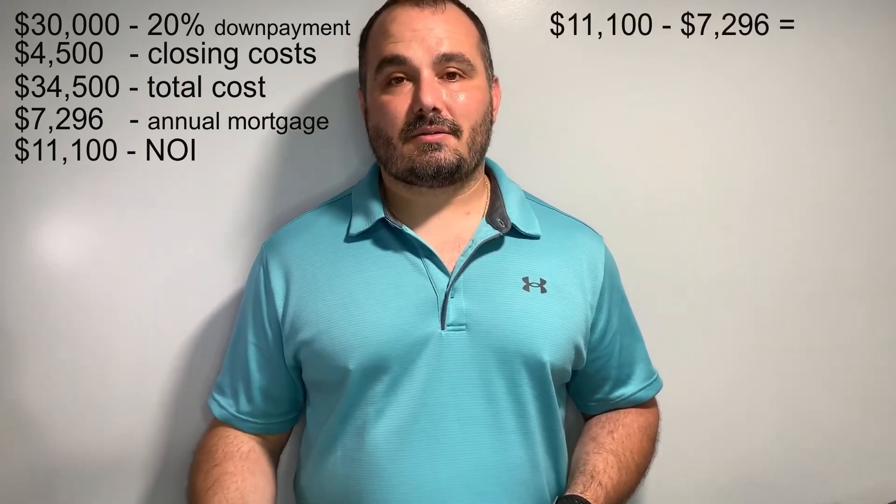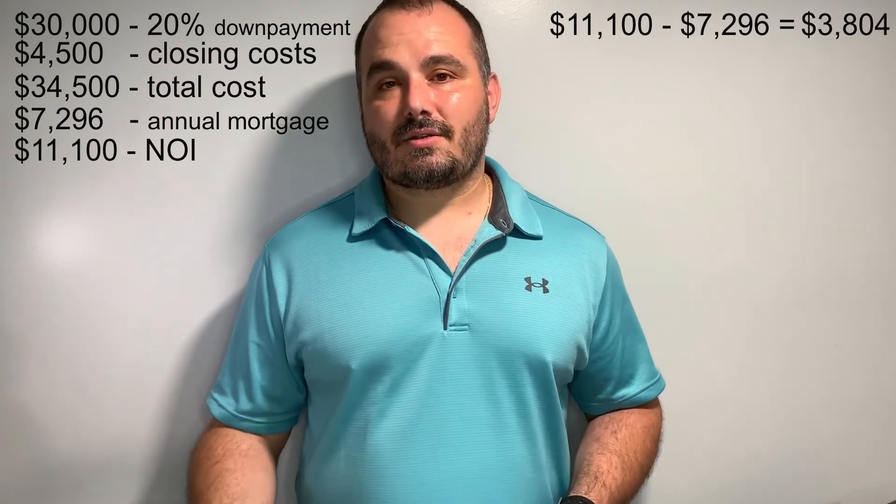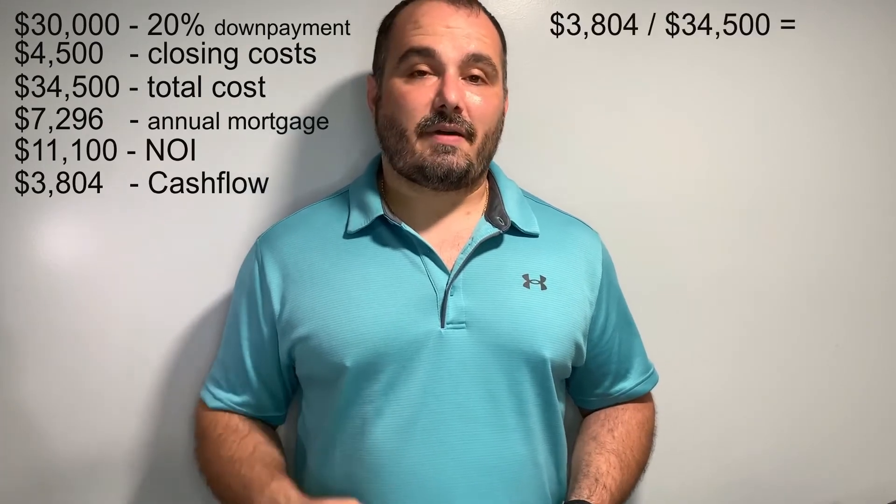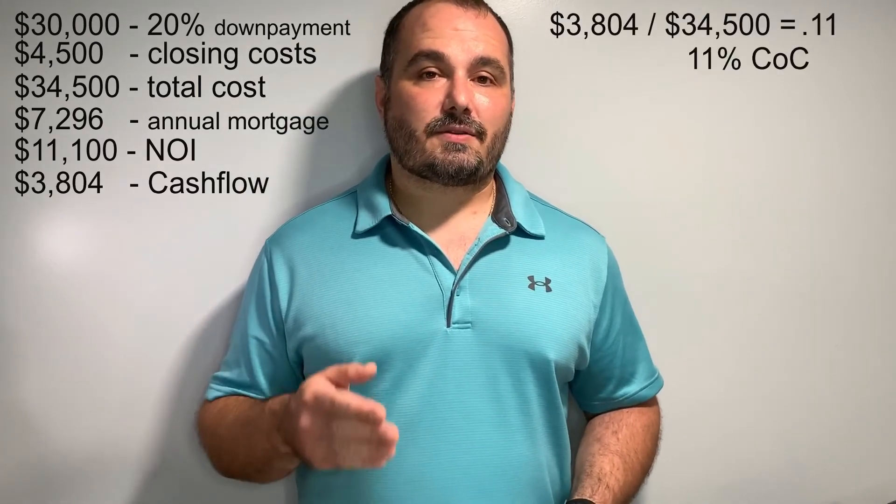Using the same property but with a loan: a 20% down payment is $30,000, plus $4,500 in closing costs, for a total of $34,500 to close. A 30-year mortgage at 4.5% would be about $608 a month or $7,296 annually. Taking our $11,100 and subtracting $7,296 for the mortgage leaves $3,804 of annual cash flow. Taking $3,804 divided by $34,500 gives us 0.11, or an 11% cash-on-cash return. The numbers show us that getting a mortgage on this house would be a better return on investment.